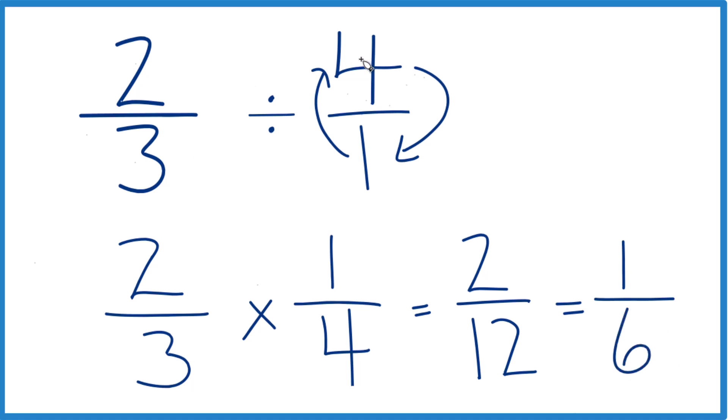So two-thirds divided by four, or two-thirds times one-fourth, that gives us one-sixth. This is Dr. V, and thanks for watchin'.